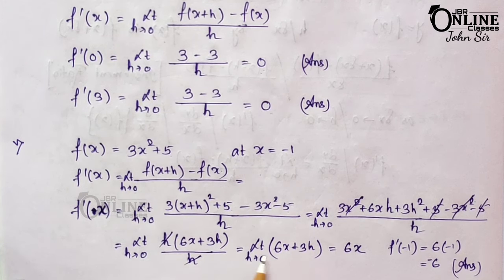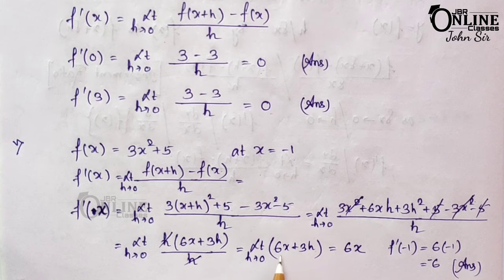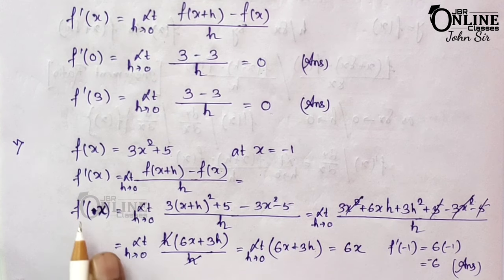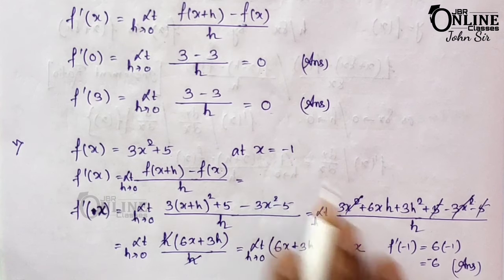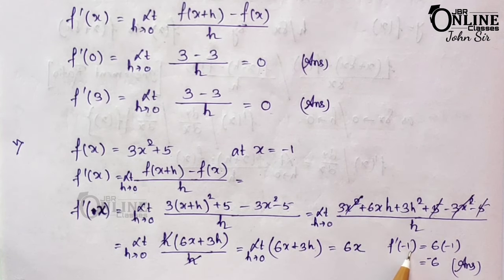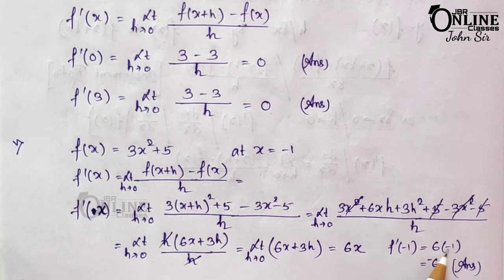After cancellation of 3x² and 5, take h as common: limit h→0 of [6x + 3h] / 1 = 6x + 3h. Substituting the limiting value as h→0, it becomes 6x + 0 = 6x. So f'(x) = 6x. To find f'(-1), substitute x = -1: 6(-1) = -6.